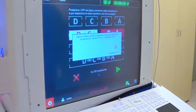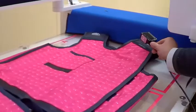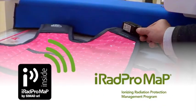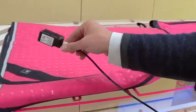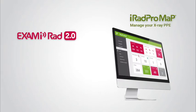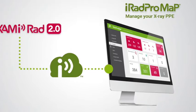In the event that the PPE subjected to the integrity check is equipped with iRad ProMap technology for the computerized management of the anti-x-ray PPE, Examerad 2.0 is able to record the outcome of the check directly in the management database, associating it to the PPE scanned.